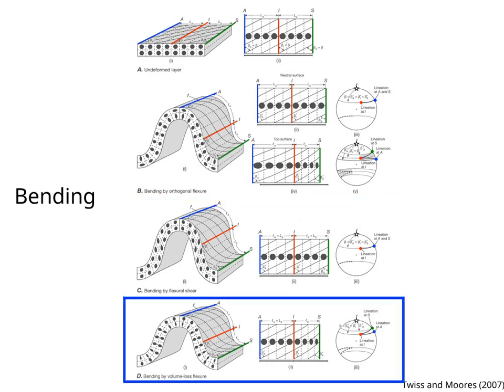Bending by volume loss flexure results from solution along seams, concentrated on the concave side of the fold. Thus the layer is shortened in a direction normal to the hinge on the concave side of the fold, whereas the convex side undergoes no strain and forms a neutral surface.